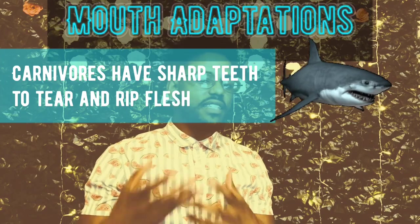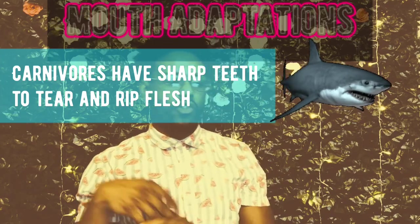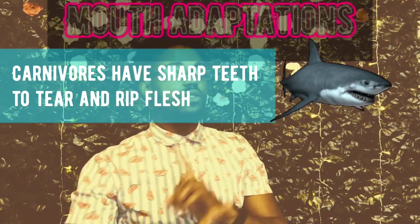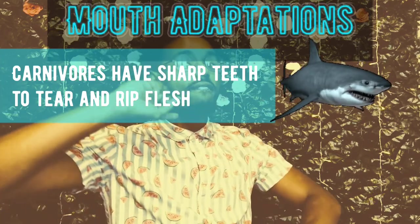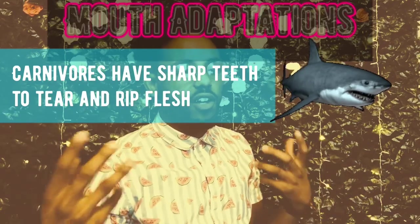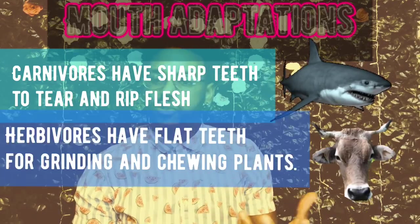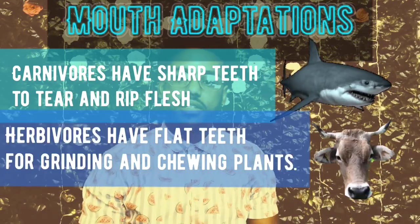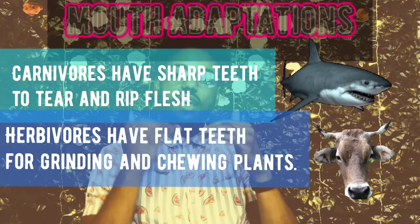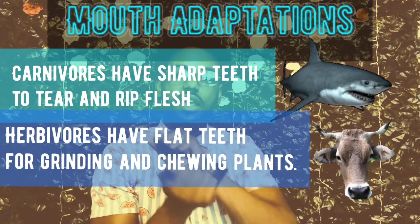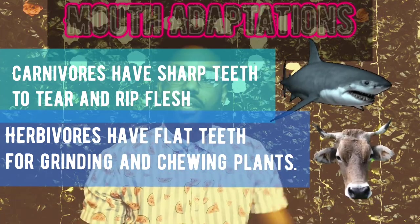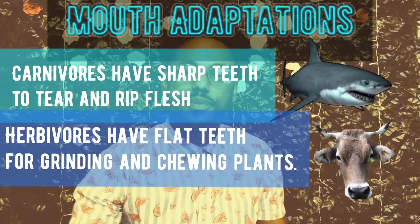Flat teeth are for grinding food, and that belongs to the herbivore. If you guessed herbivore, you would be correct. Herbivores eat a lot of plants, just like cows. Cows have really flat teeth and do a lot of grinding to break up that plant material.